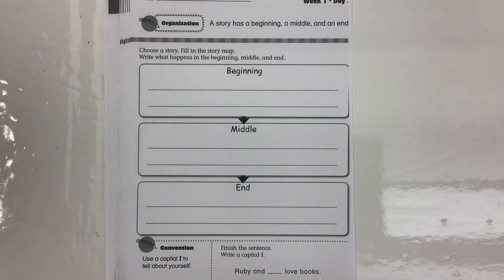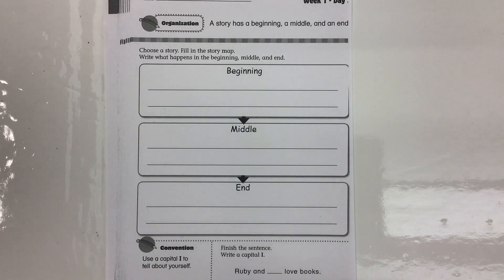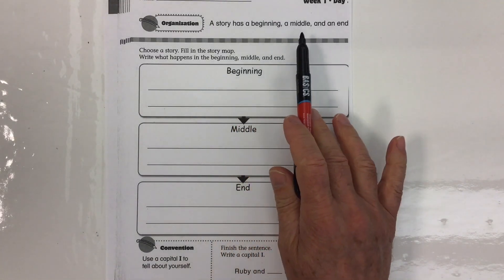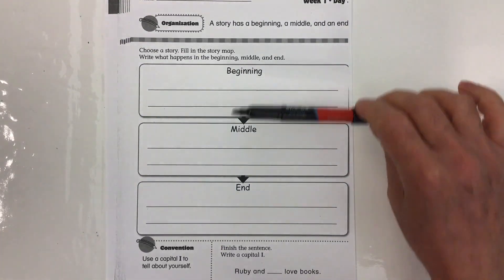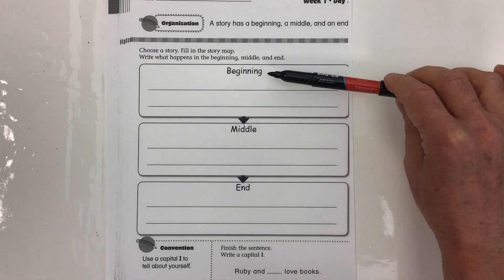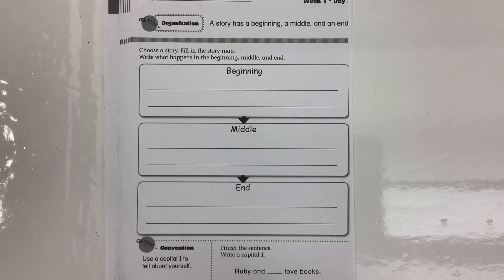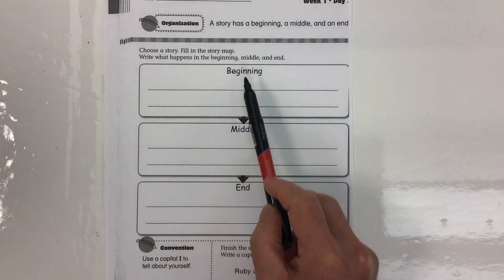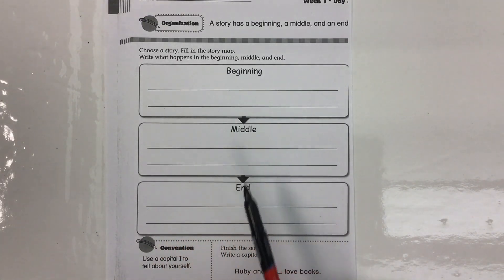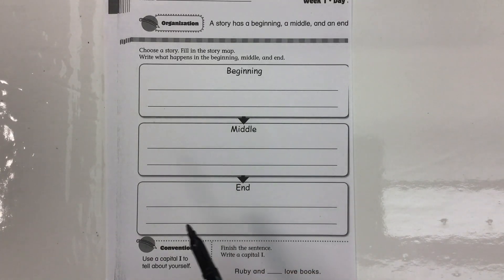We're looking at a worksheet here as part of our six plus one traits of writing, and we're looking at the trait called organization. Organization has a lot to do with how a story has a beginning, a middle, and an end. We've got three little sections set up here with writing lines — beginning, middle, end. These three rectangles are what we call a story map.